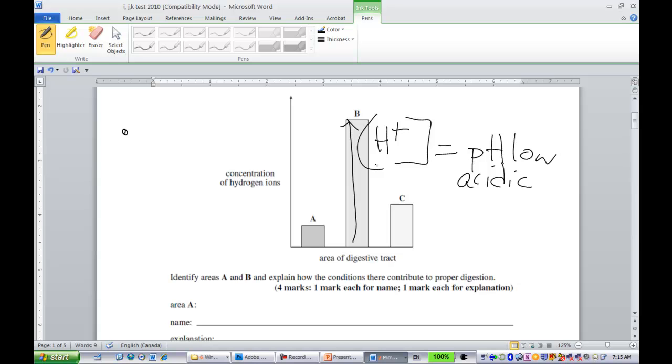So B would be the stomach, A would be the small intestine, and C would be the mouth. If you got caught by the pH monster, make note to self, double check.